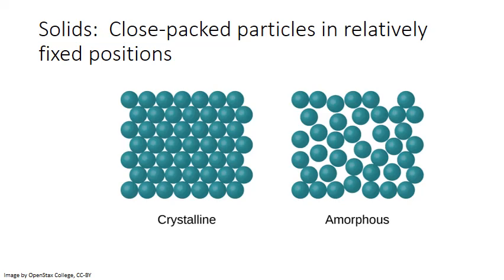In contrast for amorphous solids the particles are not organized in a regular repeating pattern and the solid on the larger scale doesn't show a regular shape either. Glass and plastic are great examples of amorphous solids.